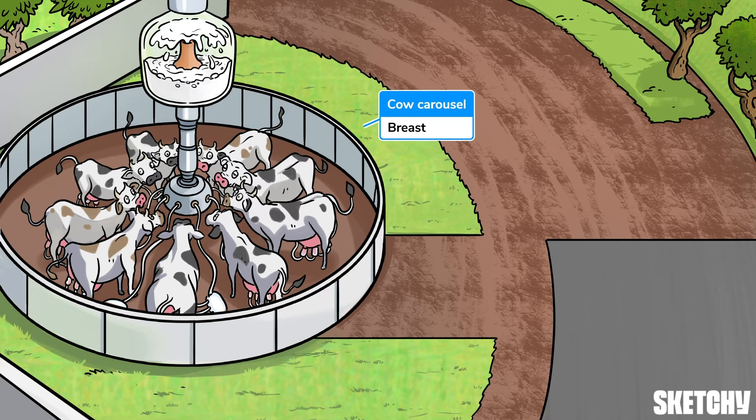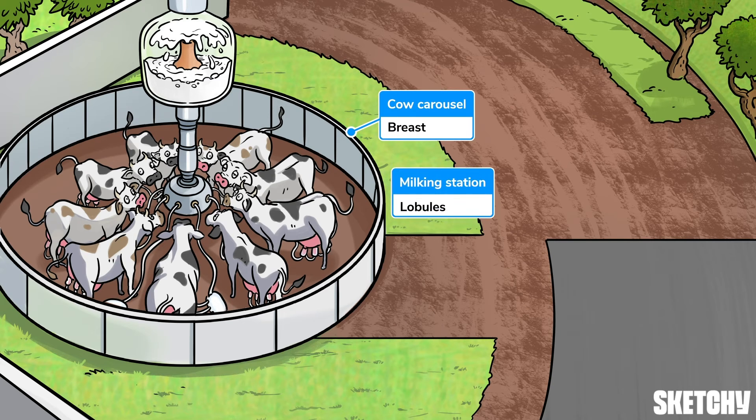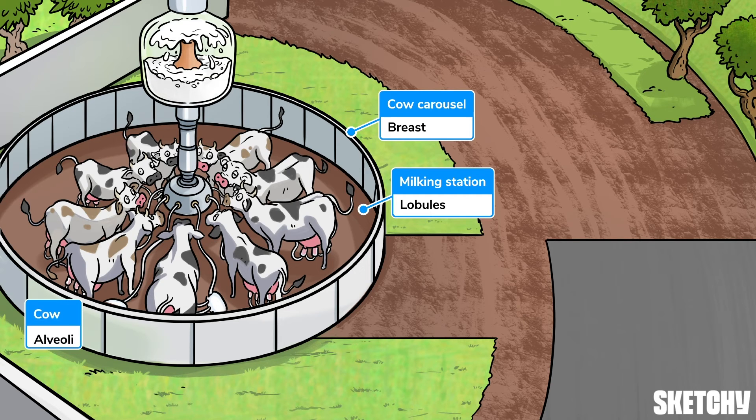Now, imagine this cow carousel as the breast. Think of these milking stations where the cows sit as the lobules. If the stations are the lobules, then the cows are the alveoli, since the alveoli and the cows produce the milk.